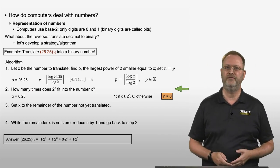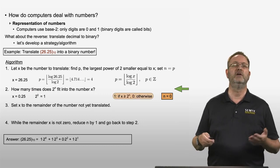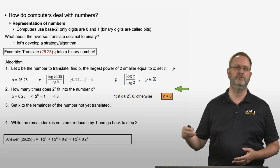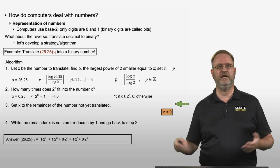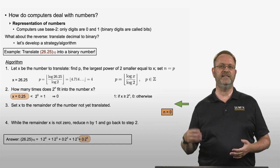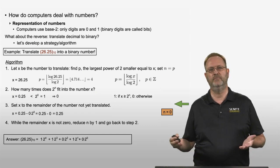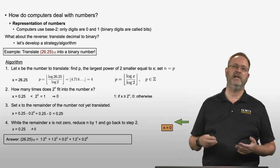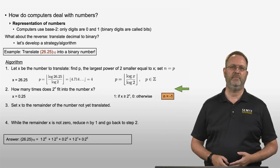Now we compare 0.25 to 2 to the power 0, which equals 1. Since 0.25 is smaller than 1, the digit is 0. We add plus 0 times 2 to the power 0. Step 3: x remains 0.25. The remainder is still not zero, so we reduce n from 0 to negative 1 and go back to step 2.